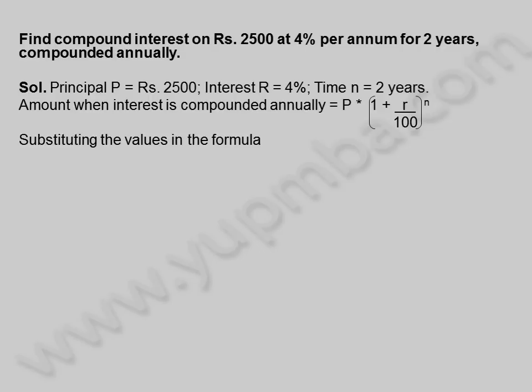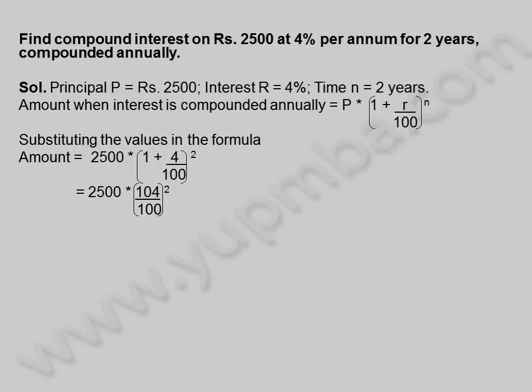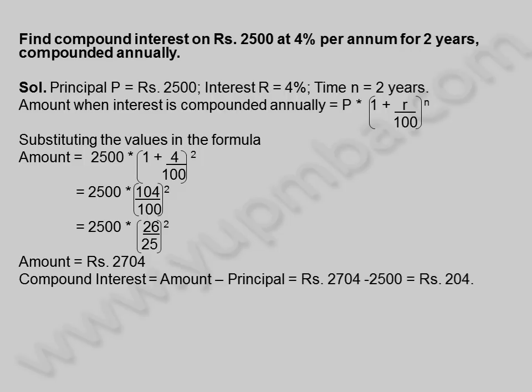Substituting the values in the formula. Amount is equal to 2,500 into 1 plus 4 by 100, whole square. Is equal to 2,500 into 104 by 100, whole square. Is equal to 2,500 into 26 by 25, whole square. Amount is equal to 2,704 rupees. Compound interest is equal to amount minus principal is equal to 2,704 rupees minus 2,500 is equal to 204 rupees.